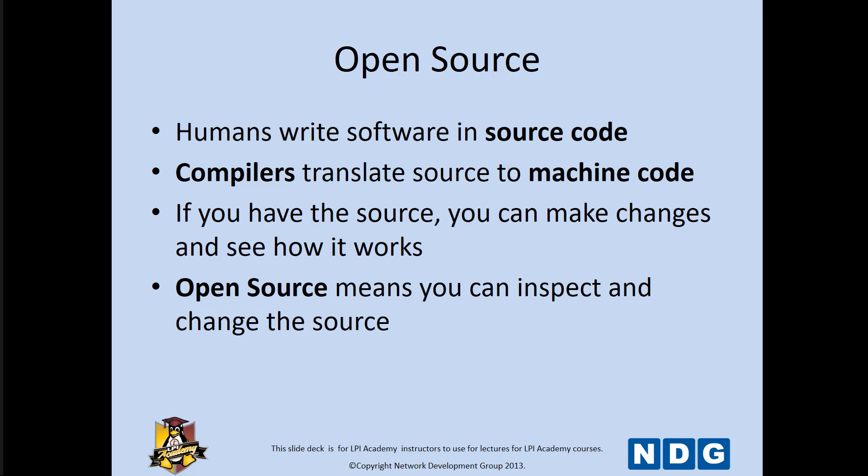Open source means you can inspect and change the source code as you want. And that does mean any modifications could improve or break it. Typically with collaboration, we're not dealing with modifications that will break the operating system, because the community wants to see this grow. So even if you have one or two people sending out code that damages it, you have several hundred reviewing, reanalyzing, and then fixing it.